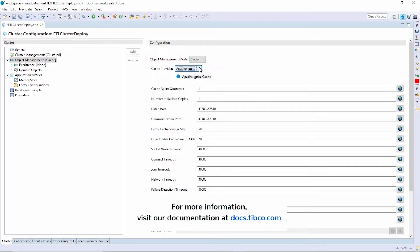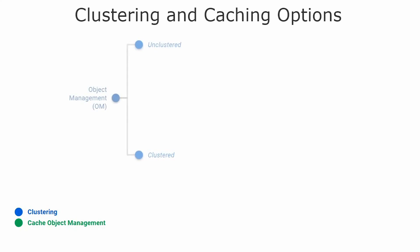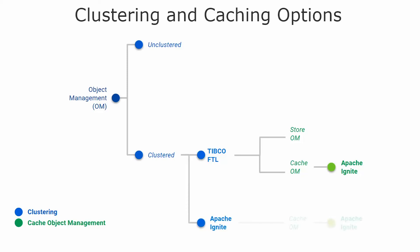For a detailed understanding of each configuration type, refer to the configuration guide of TIBCO Business Events at docs.tibco.com. Let's take a look at the cluster options one by one and their respective cache options. If you want to use TIBCO FTL for clustering, you can either use Apache Ignite as a cache provider, or skip using a cache and configure a store directly. If you are using Apache Ignite as your cluster, you can configure Apache Ignite as the cache provider. You also have the option to continue to use Active Spaces 2.x as the cluster and cache provider for your existing projects.